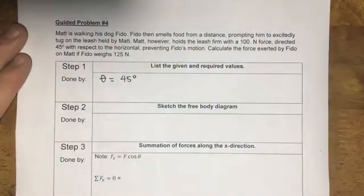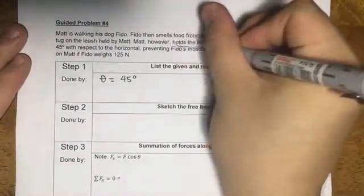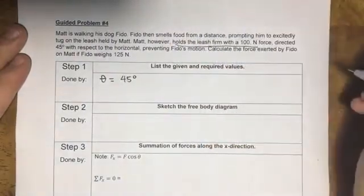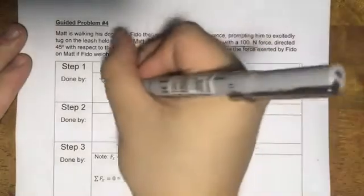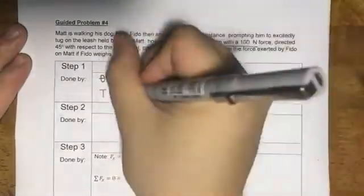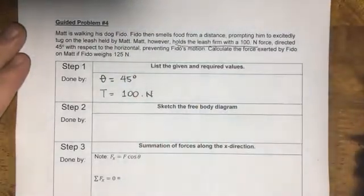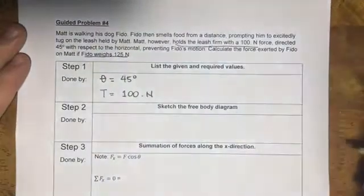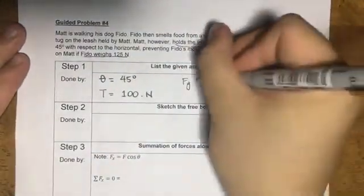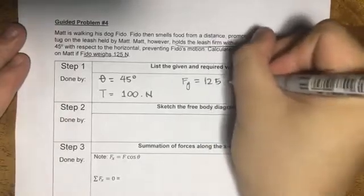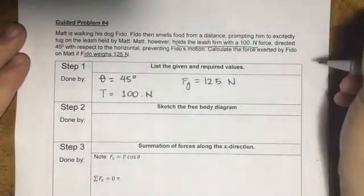And the leash, Matt holds it firm with a 100 newton force, so the leash is a rope, there's tension. Tension equals 100 newtons. If Fido weighs 125 newtons, so weighing instantly means gravity, Fg = 125 newtons. And by the way, tension is directed 100 newtons going where?